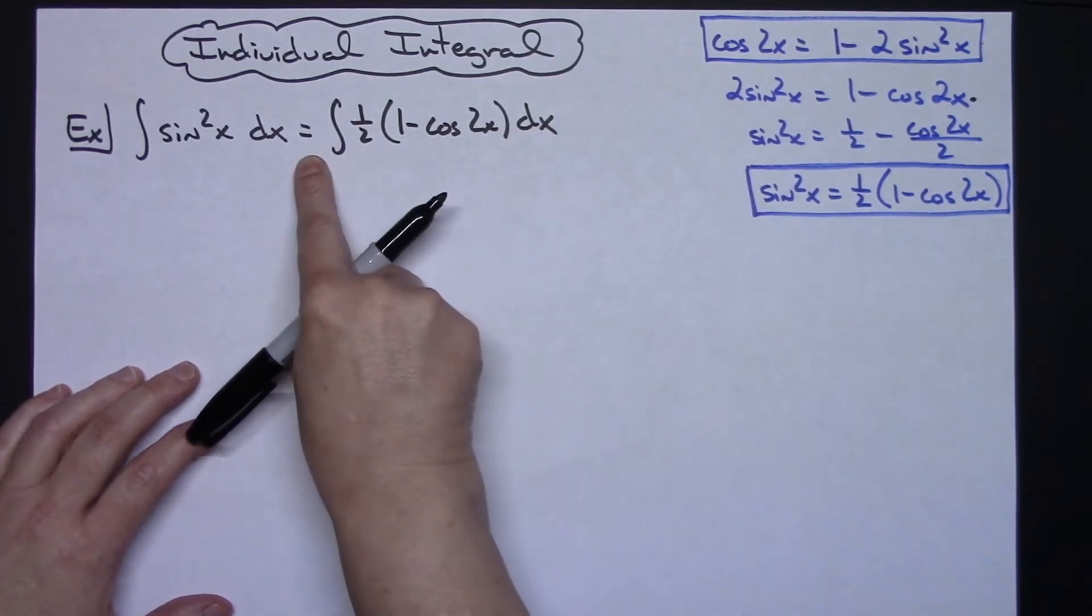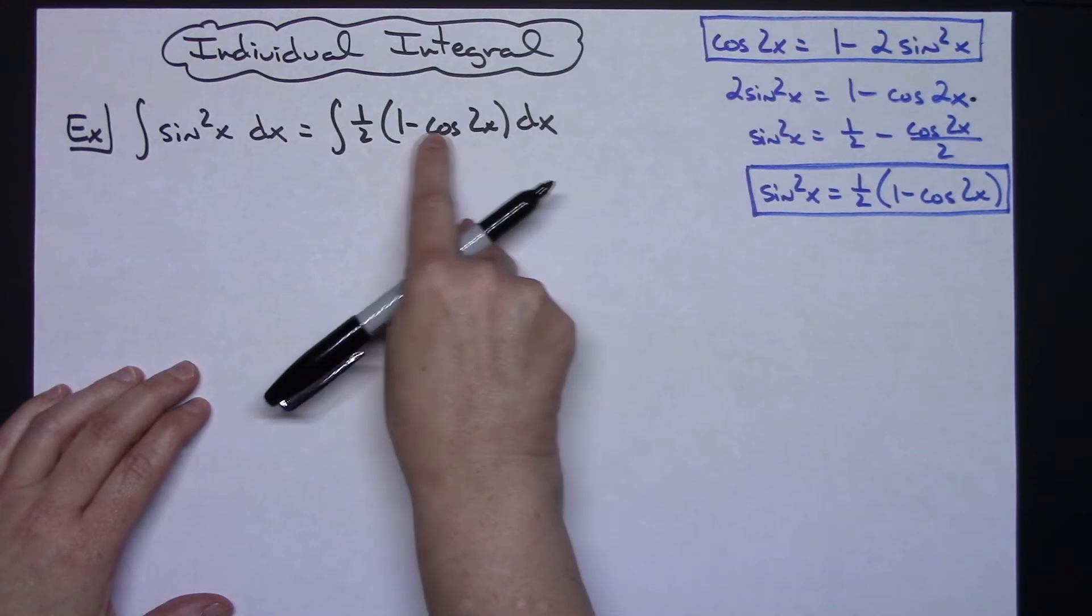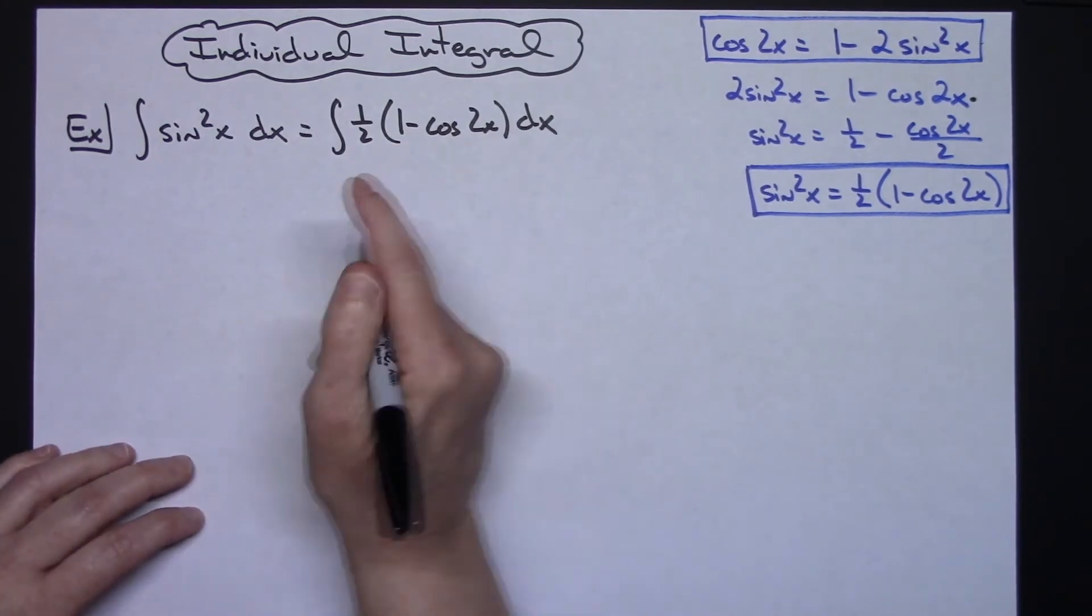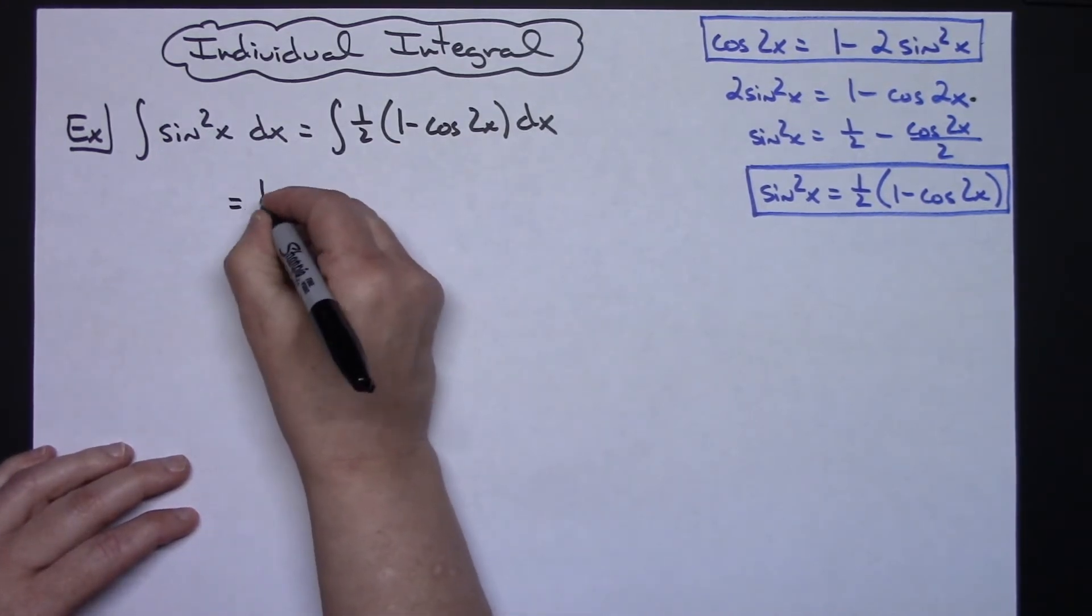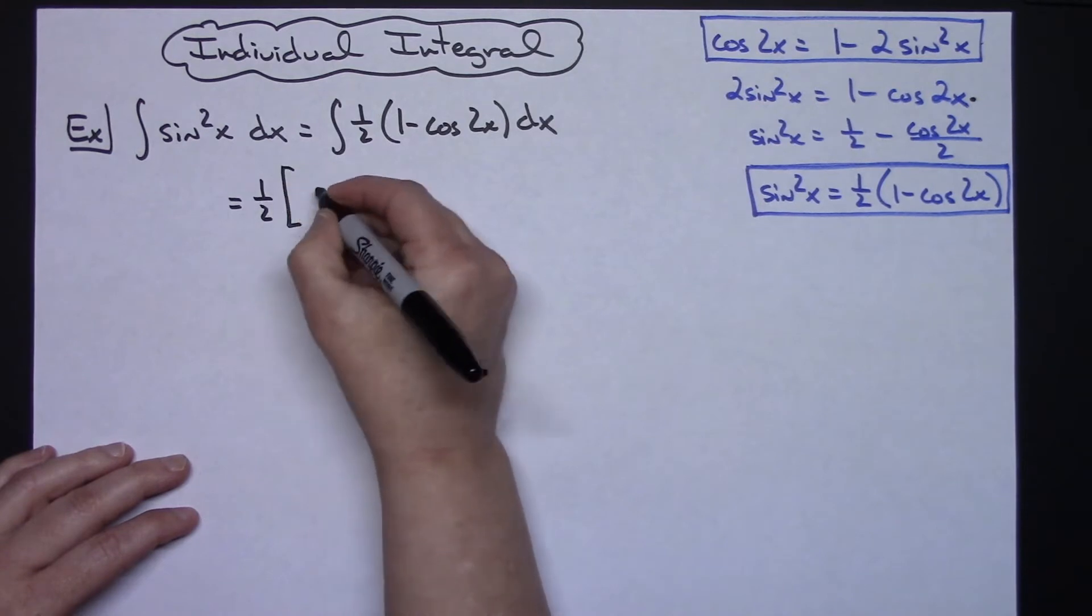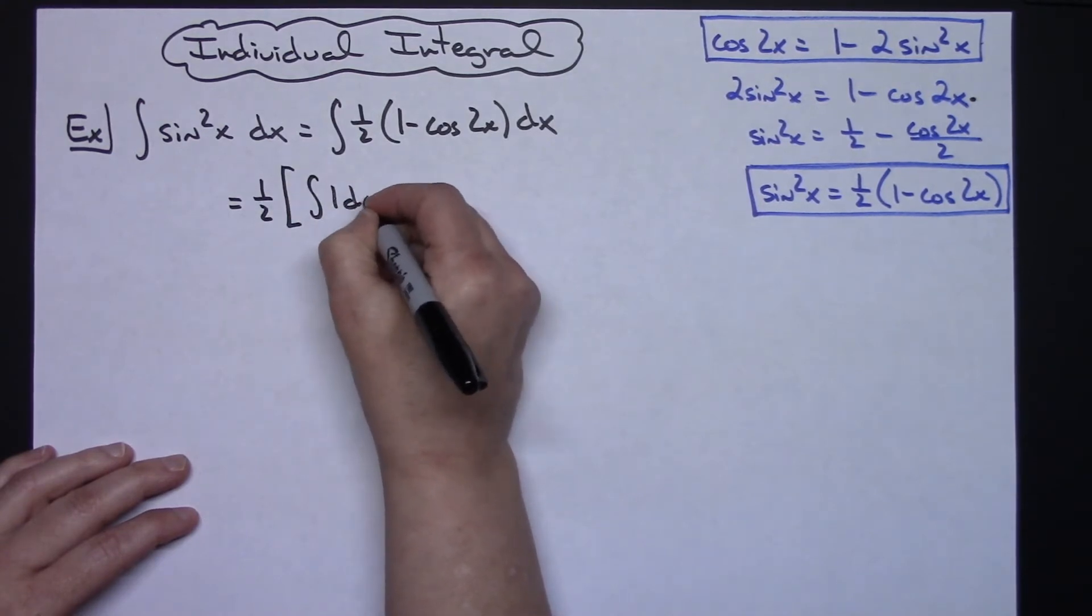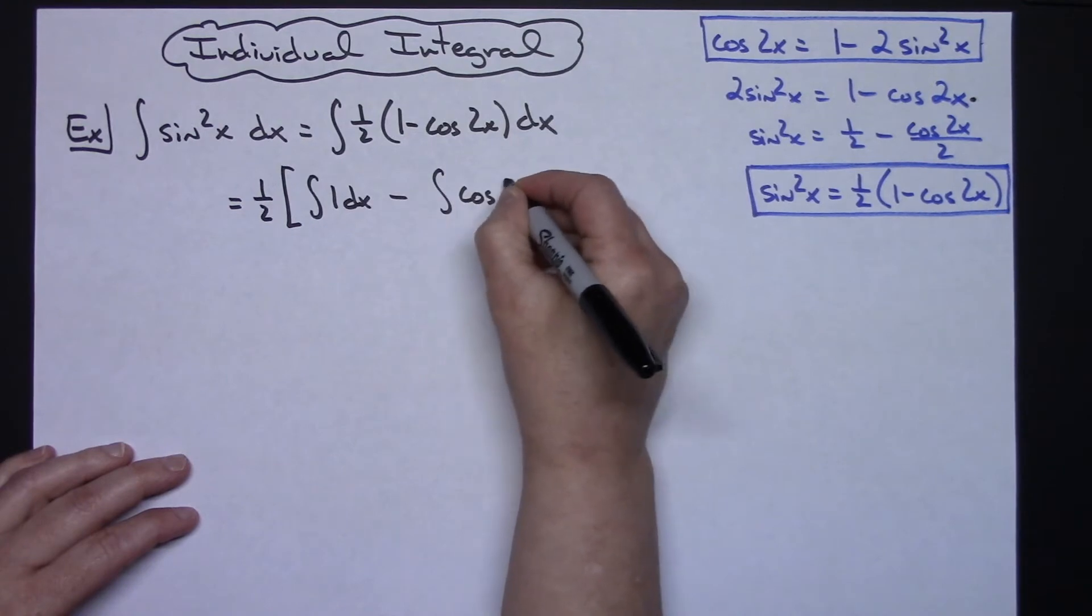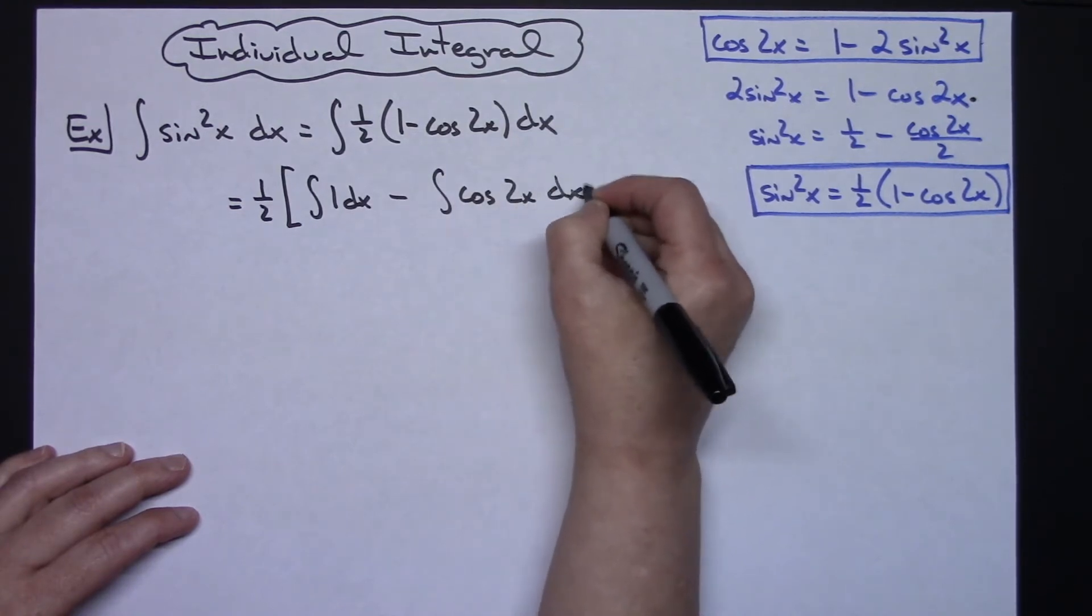I'm going to pull this 1 half out in front and then I'm going to take these two and write them as individual integrals. So then I'm going to have a 1 half out in front.